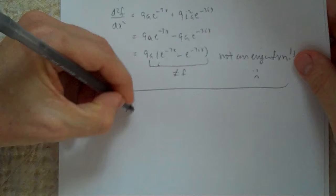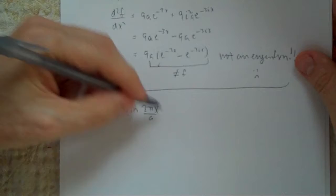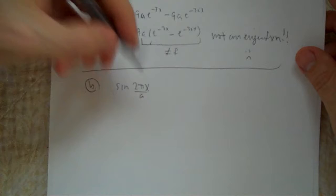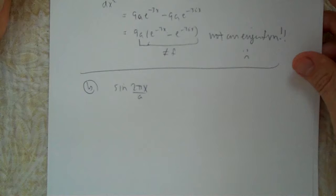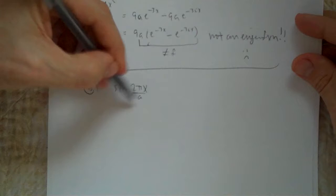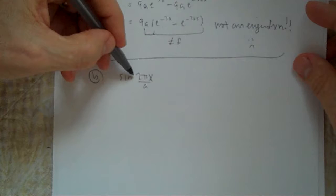Part B: f equals sine of (2πx/a). This is getting you ready for chapter 15 - it's a form of sine we've seen in a wave function. The question is: is this an eigenfunction of the operator d²/dx²?